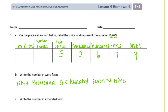And then write the number in expanded form. Expanded form just means that we're going to take each place value and write each number as just that place value. So we have a 5 in the ten thousands place, which is 50,000. There's nothing in the thousands place, so I'm just going to skip it. In the hundreds place we have a 6, so 600. Plus in the tens place there's a 7, or 70. Plus in the ones place there is a 9. So that is expanded form.